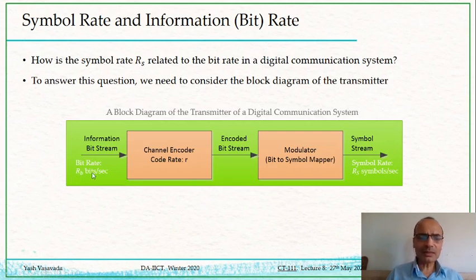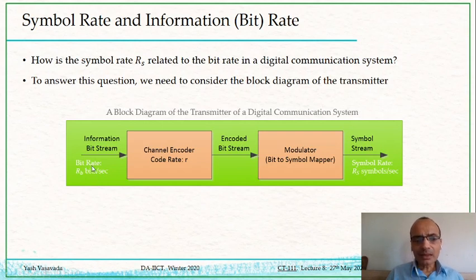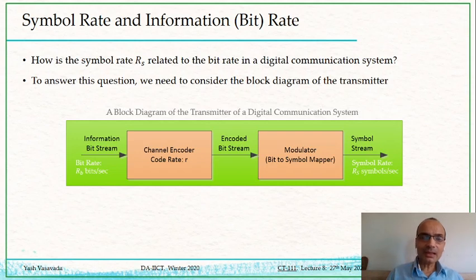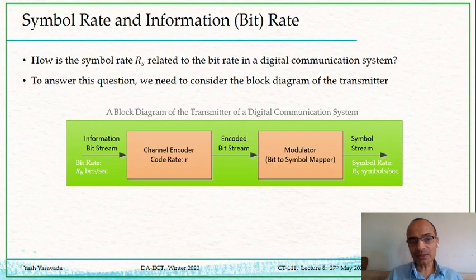Let us say RB is 100 bits per second, which means it takes one second to capture 100 bits. No matter what we do to those bits — through channel encoding or modulation — we do not want to either increase or decrease the time those 100 bits take to be transmitted. If we increase the time, then at the receiver side the meaning of the bits as it relates to time will get destroyed.